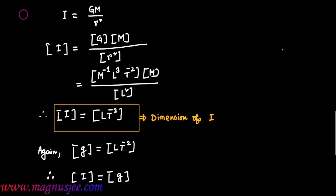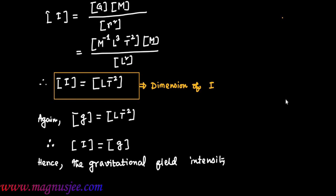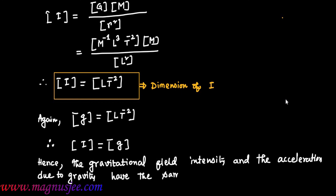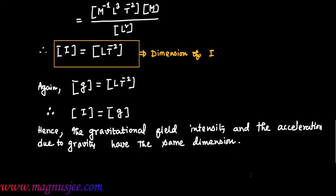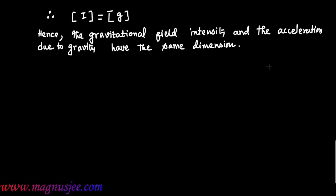The dimension of small g, or acceleration due to gravity, is also LT⁻². Hence the dimension of I is the same as the dimension of g. Therefore, gravitational field intensity and acceleration due to gravity have the same dimensions.